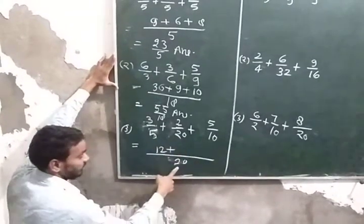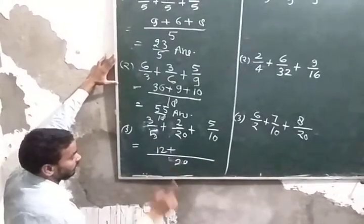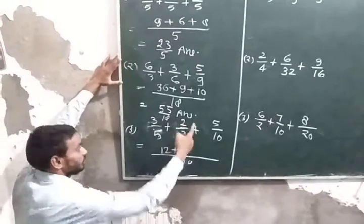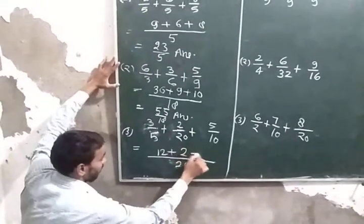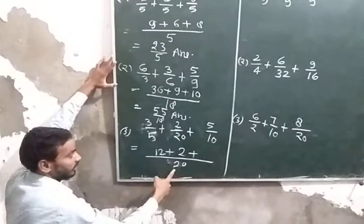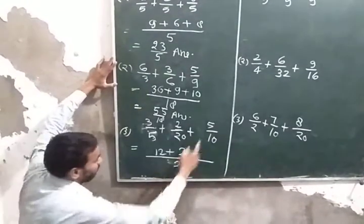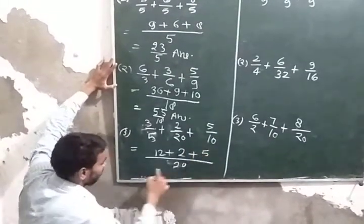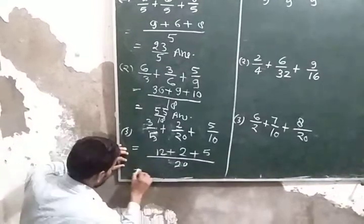Then again 20 divided by 20 is 1 time, and 1 multiplied by 2, then we get 2. And again 10 divided by 20, how much time? 2 times. Then 2 multiplied by 5, then we add this. The answer is 10.